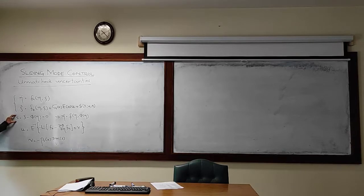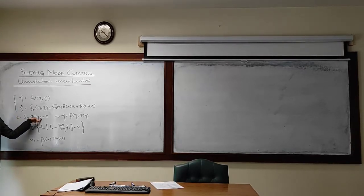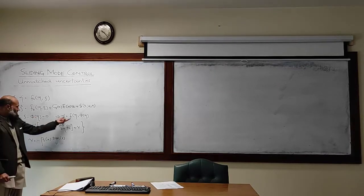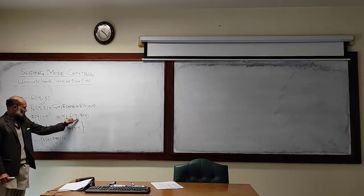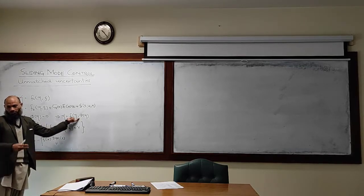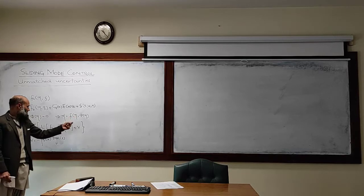For this particular system, we defined a sliding surface. By definition of sliding surface, we mean selection of phi of eta. This phi of eta was selected such that the equilibrium point of this system, which is at the origin, is asymptotically stable.